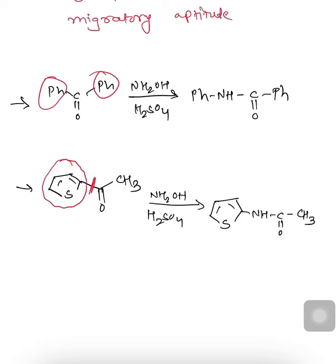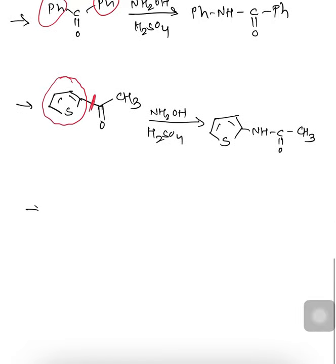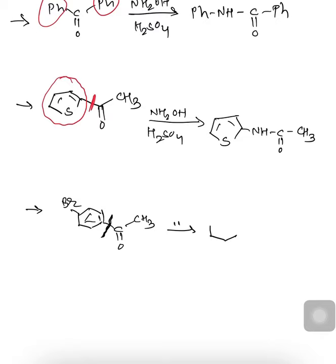Let us consider another example: an aromatic ring with a Br group — Br-Ar-C(=O)-CH3. If we carry out Beckmann rearrangement, NH will be inserted between the aryl ring and the carbonyl group. The resultant product will be Br-Ar-NH-C(=O)-CH3. This way we can carry out the reaction with different substituted ketones and determine the final product.